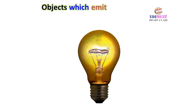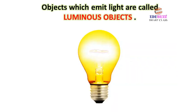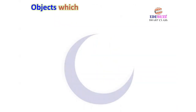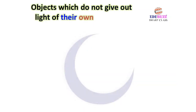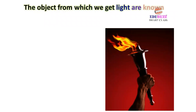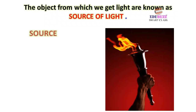Objects which emit light are called luminous objects. Objects which do not give out light of their own are called non-luminous objects. The objects from which we get light are known as sources of light.